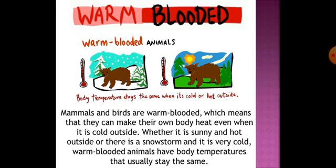Warm-blooded animals are animals whose body temperature stays the same whether it is cold or hot outside. For example, mammals and birds are warm-blooded animals, which means they can make their own body heat even when it is cold outside. Whether it is sunny and hot or stormy and cold, warm-blooded animals have body temperatures that usually stay the same.